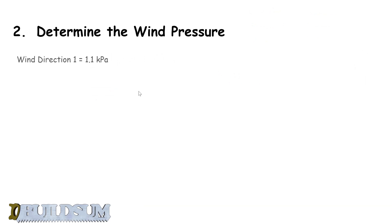So we can write those down: wind direction 1 gives us a lateral wind pressure of 1.1 kPa, and wind direction 2 gives us a lateral wind pressure of 1.2 kPa. Now that we know what pressure the wind is going to put on those elevations, in the next video we'll work out the area of those elevations and then we can calculate our racking force.